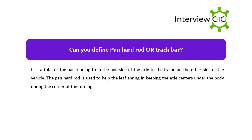Can you define a panhard rod or track bar? It is a tube or bar running from one side of the axle to the frame on the other side of the vehicle. The panhard rod is used to help the leaf spring in keeping the axle centered under the body during cornering.